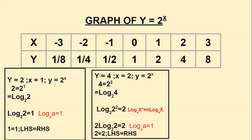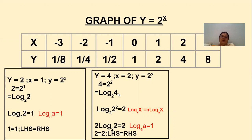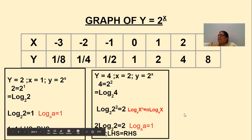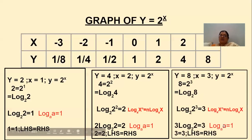Now the second verification: y is 4 and x is 2. From y equals 2 to the power of x, we write 4 equals 2 to the power of 2. In logarithmic form, log 4 to the base 2 — since 4 equals 2 squared, we apply the power rule: log x to the power of n gives n log x to the base a. So this gives 2 log 2 to the base 2, and applying log a to the base a equals 1, we get 2, which matches x equals 2.